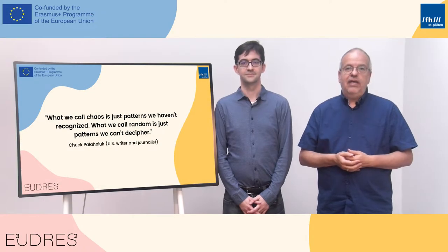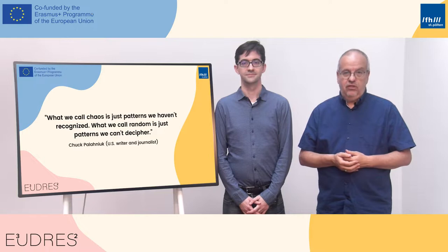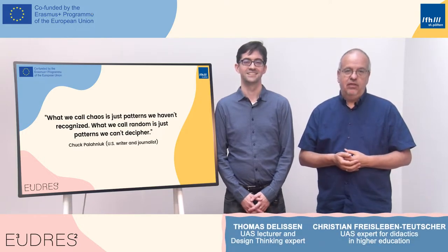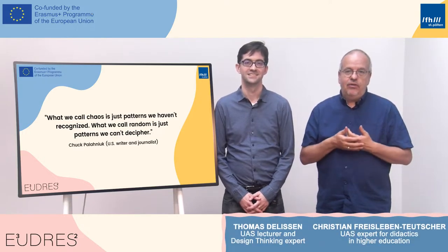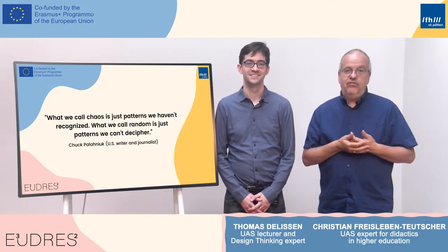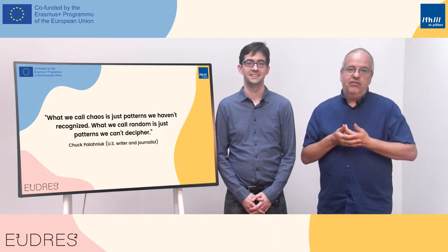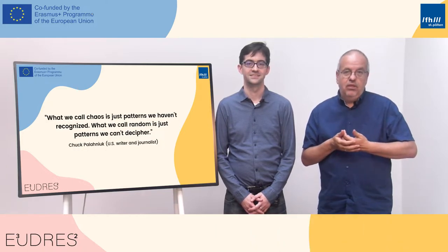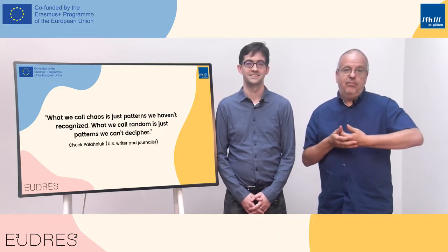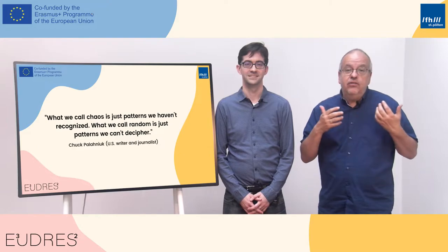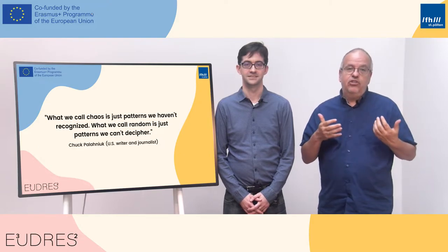What we call chaos is just patterns we haven't recognized. What we call random is just patterns we can't decipher. These words are by Jack Palahniuk, a US writer and journalist.